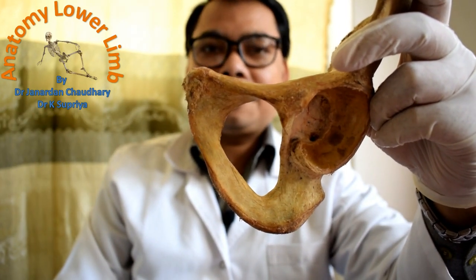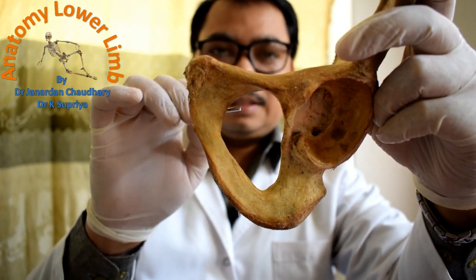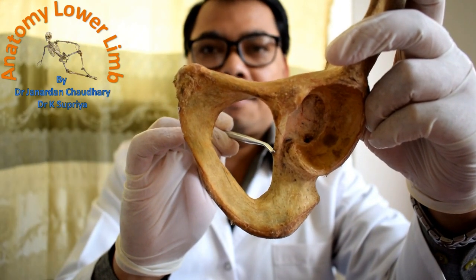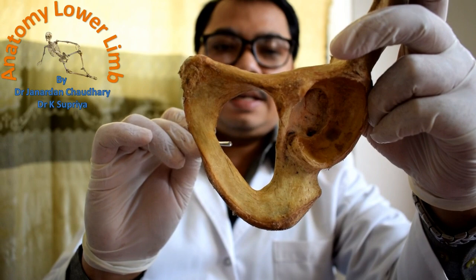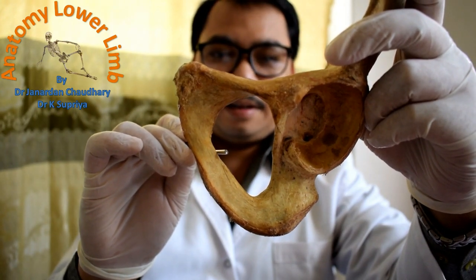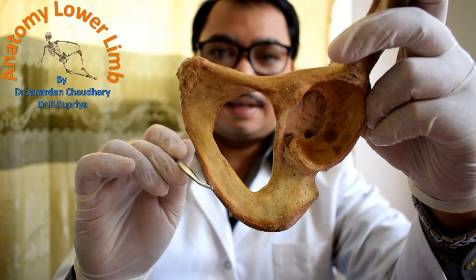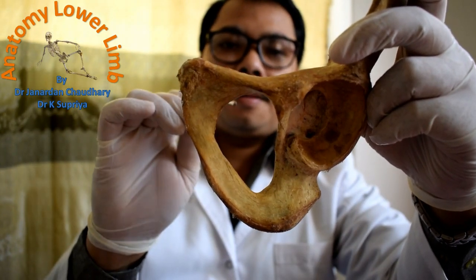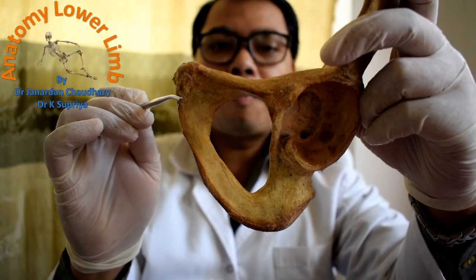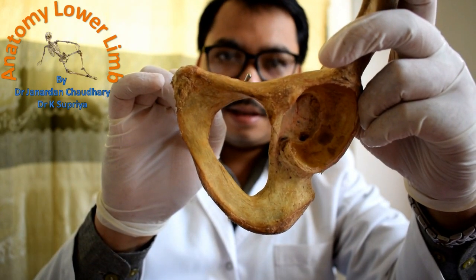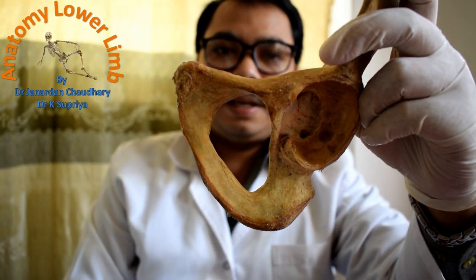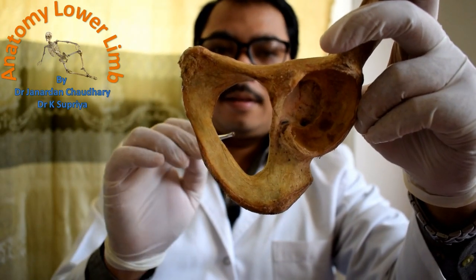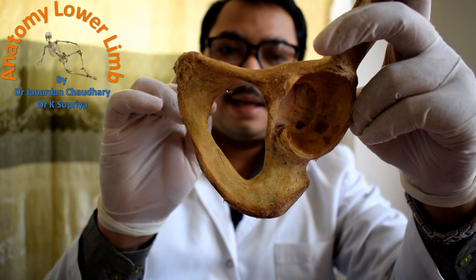The obturator foramen is contributed laterally by the body of ischium, medially and inferiorly by the ischio-pubic ramus, upper and medially by the body of the pubis bone, and superiorly by the superior ramus of the pubis bone.